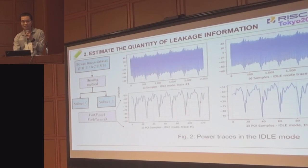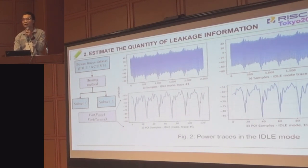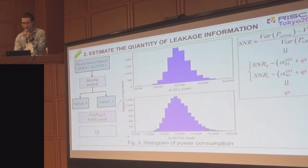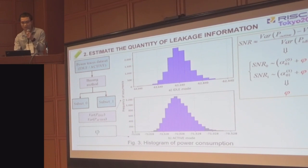In the next step, we estimate the variance of the power consumption in two modes: idle mode and active mode. And finally, we can find the histogram of power consumption and then find the skewness factor.